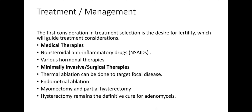Treatment and management: the first consideration in treatment selection is the desire for fertility, which will guide treatment decisions. The definitive cure is hysterectomy; however, the remaining options target the primary symptoms of heavy, painful menstrual bleeding while preserving the uterus. NSAIDs are one of the primary medical therapies — targeting the cyclooxygenase enzyme that produces prostaglandins responsible for painful cramping. Various hormonal therapies are also available, including oral contraceptive pills, levonorgestrel intrauterine devices, danazol, and aromatase inhibitors, which aim to reduce the estrogenic effects that lead to endometrial proliferation.